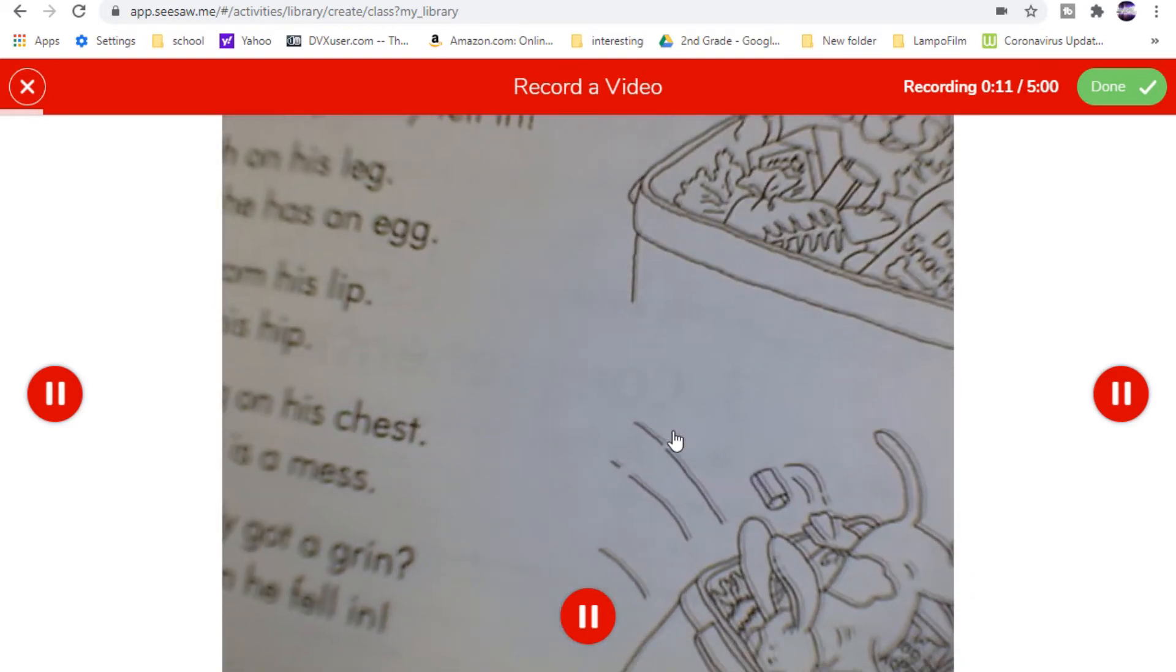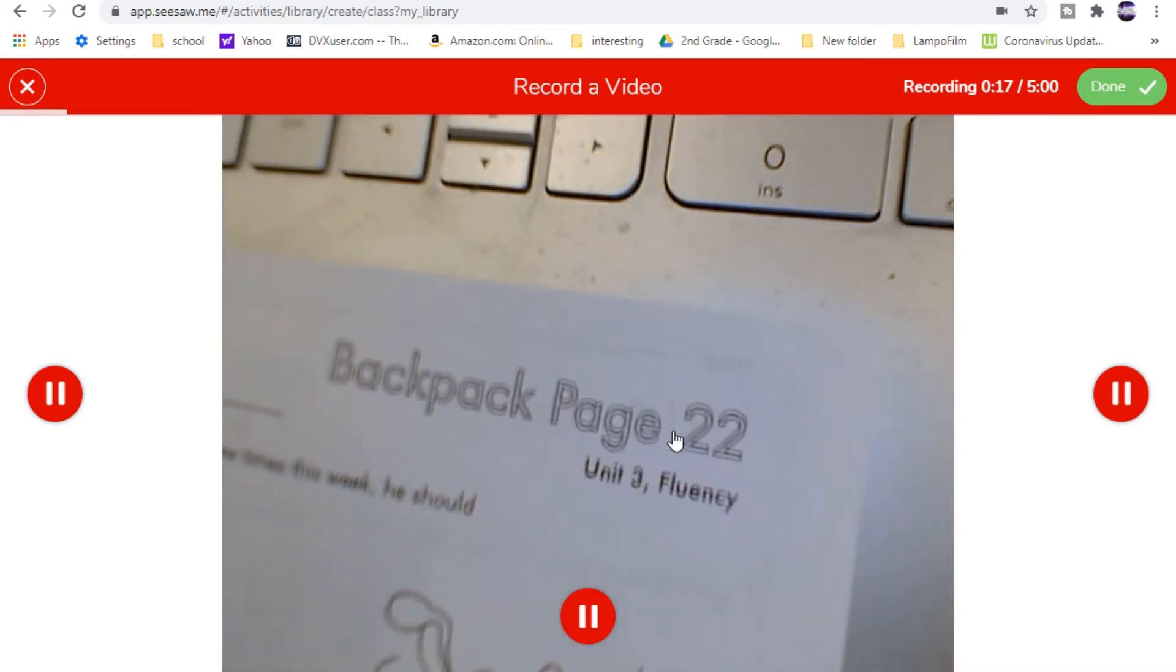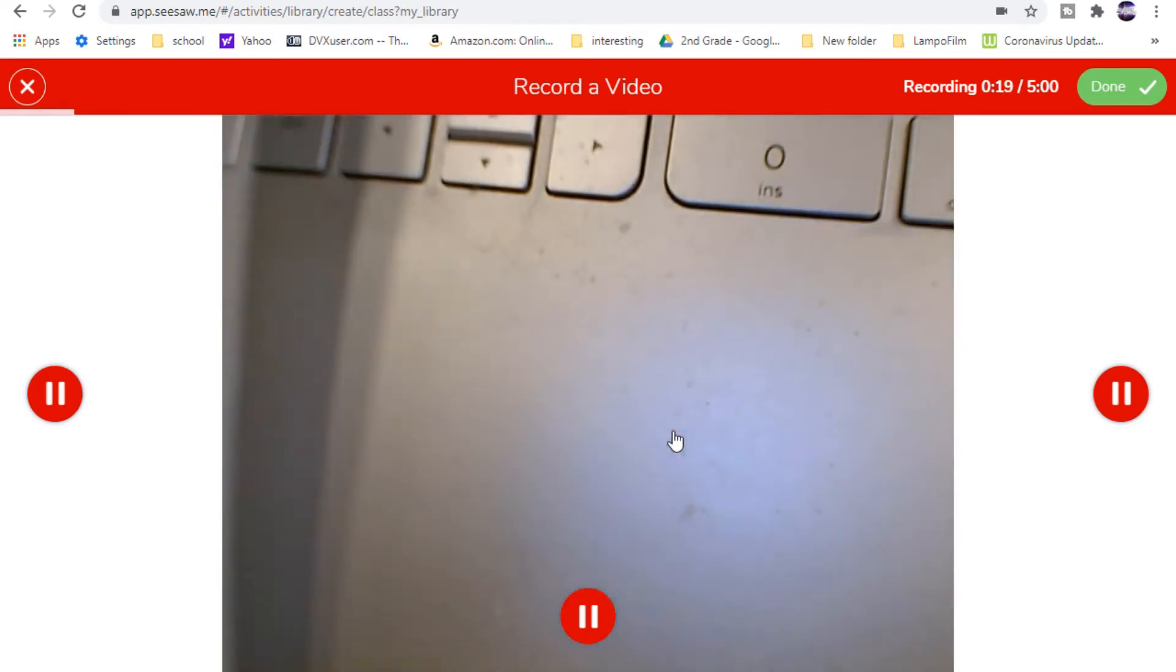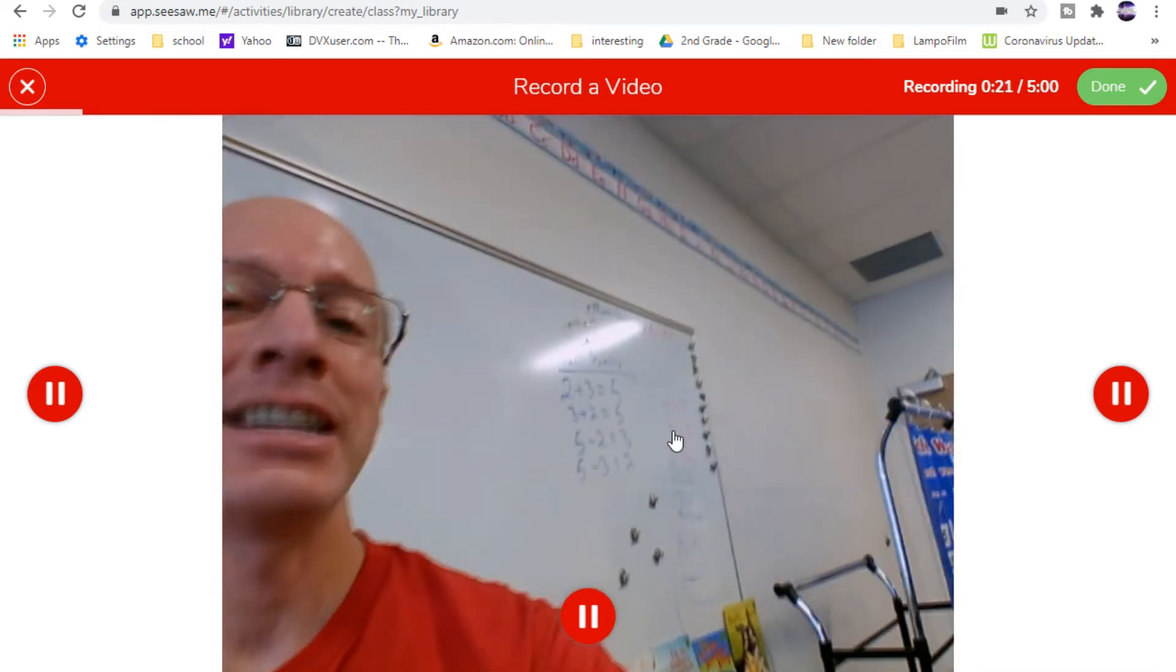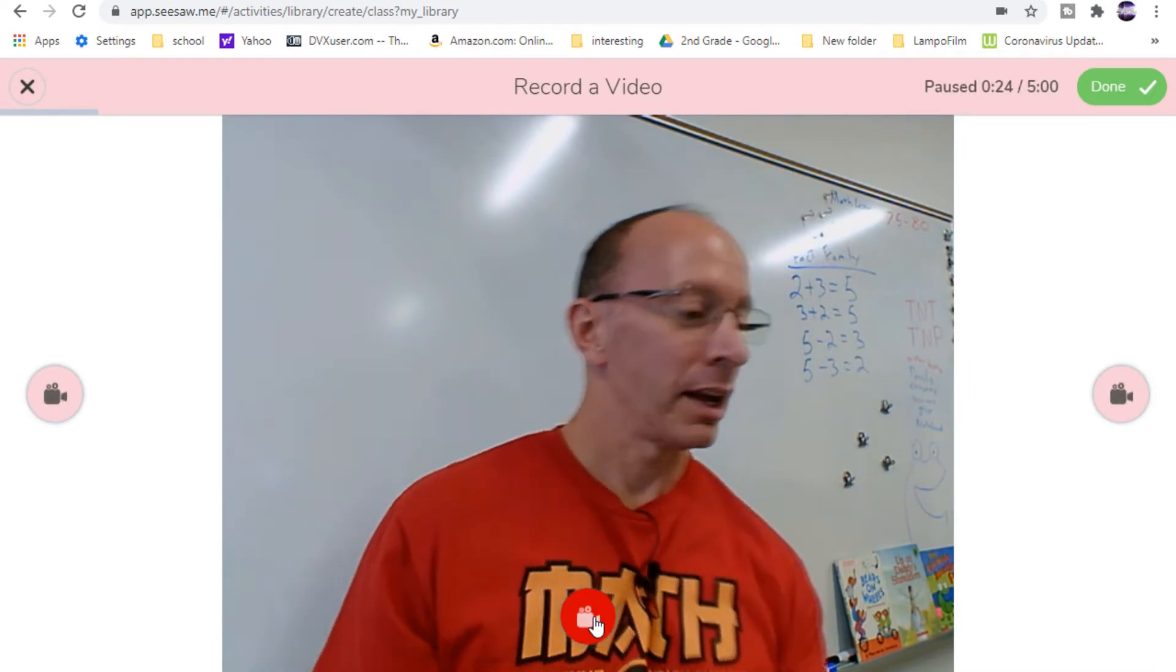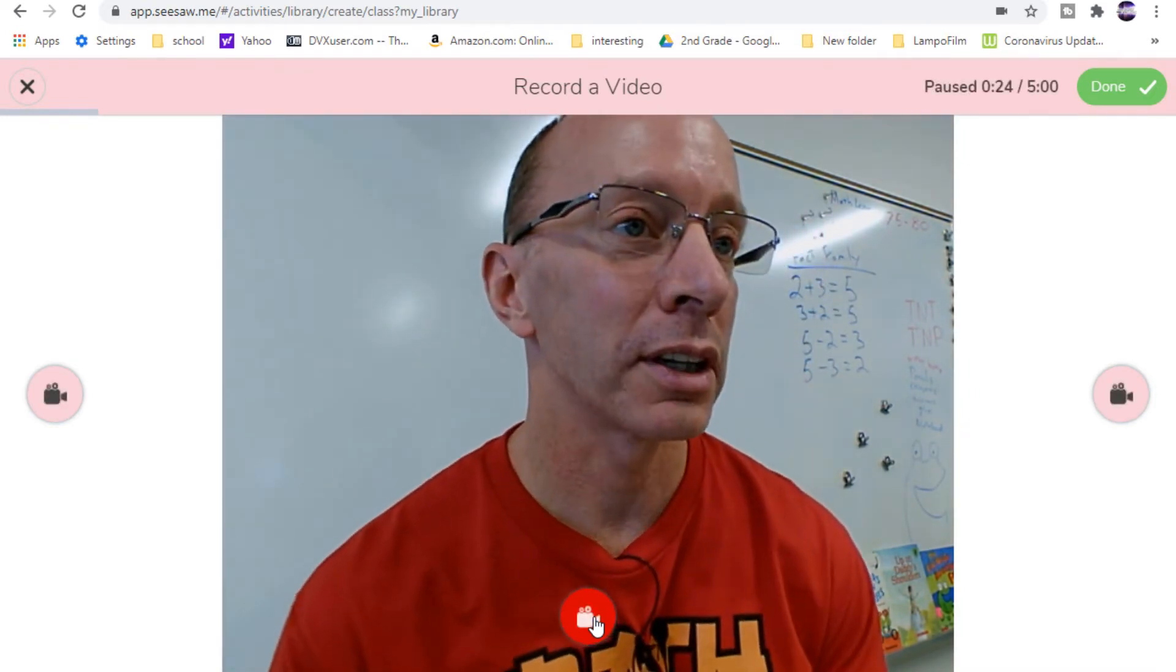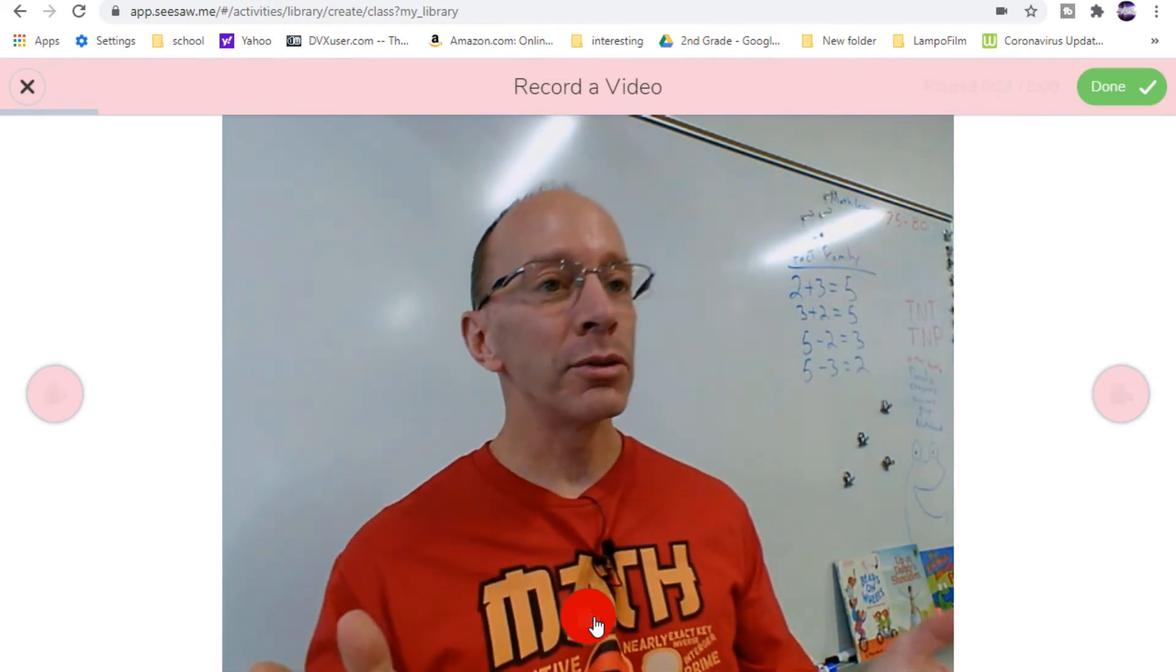this is a reading comprehension paper. So it doesn't have too much to do with mathematics. We're talking about 22, which is a double digit number. Anyway, you get the idea. And I just hit stop on there. And that video is all ready for you to share with your class. So how cool is that?